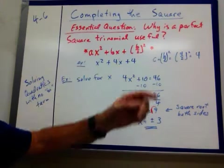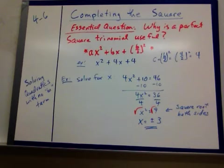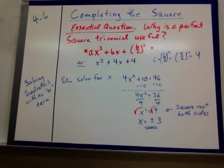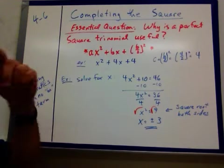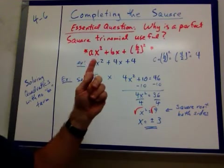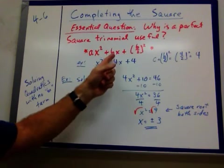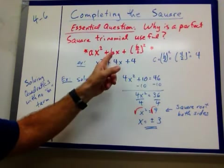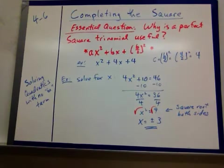The essential question here is, why is a perfect square trinomial used for? Well, let's make sure we define it first so we know what we're talking about. A perfect square trinomial is one that's of the form ax squared plus bx plus c, where our c term is half of our b term squared.